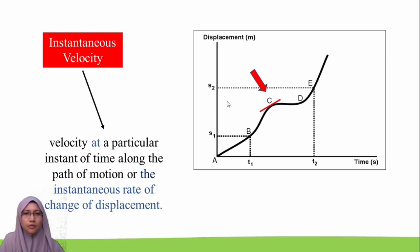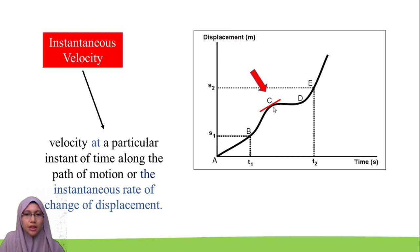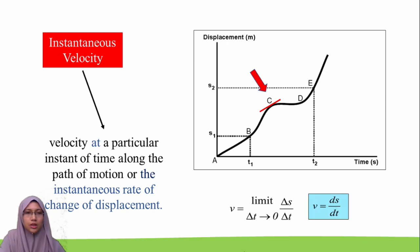Let us refer to this displacement against time graph. We focus at point C and draw a tangent line at this point. The slope of this tangent is called the instantaneous velocity, with gradient ds over dt.